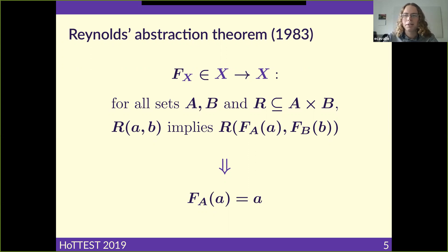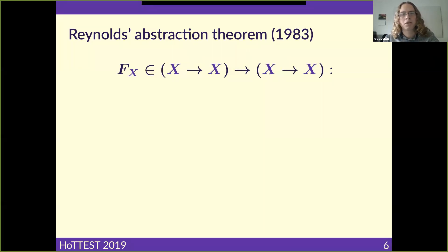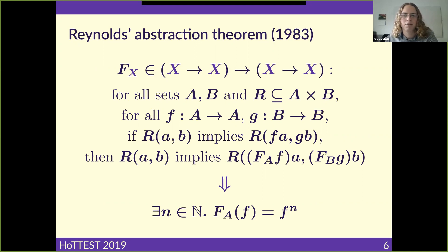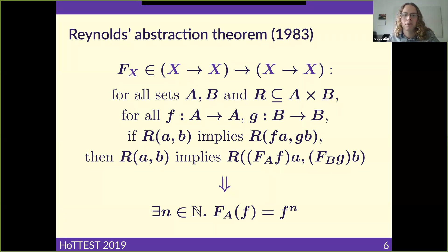You can probably taste the flavor of Yoneda here. Because this is all about relations rather than functions, we can say things about types that are less covariant. For example, a function that takes in an endo-function on a type X and spits out another has to essentially take the function it's given, compose it with itself some number of times, and spit that out. This kind of thing is useful for getting properties of polymorphic functions for free — these are called "theorems for free."